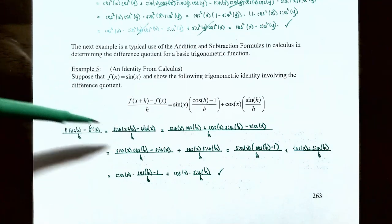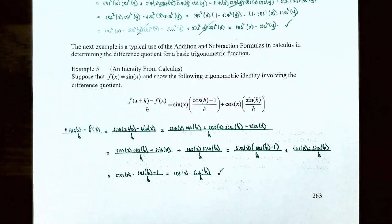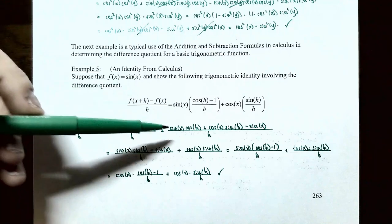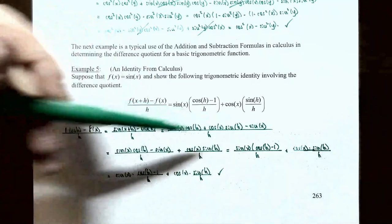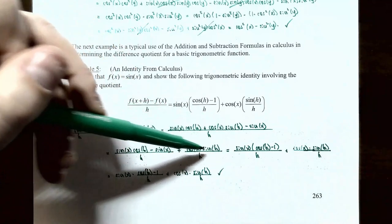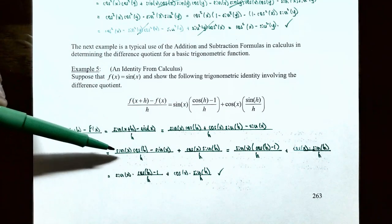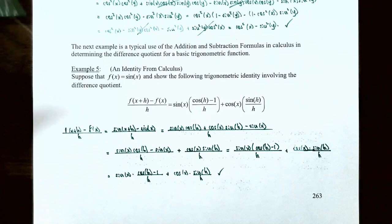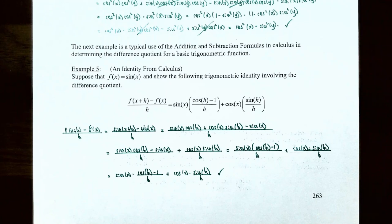So we have sine of x cosine of h plus cosine of x sine of h subtract sine of x, all divided by h. Notice sine of x appears in the first term and the last term, so we can group those. We rewrite as one fraction with numerator sine of x cosine of h subtract sine of x, plus a second fraction with numerator cosine of x sine of h, each divided by h.